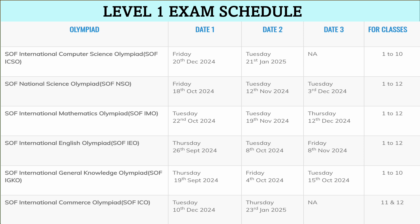Here we are going to discuss the Level 1 exam schedule. You can see different dates for a particular exam, and that is because schools are given the liberty to choose any one of these dates. A school may select one day for conducting an Olympiad exam, and later on changes will not be permitted.